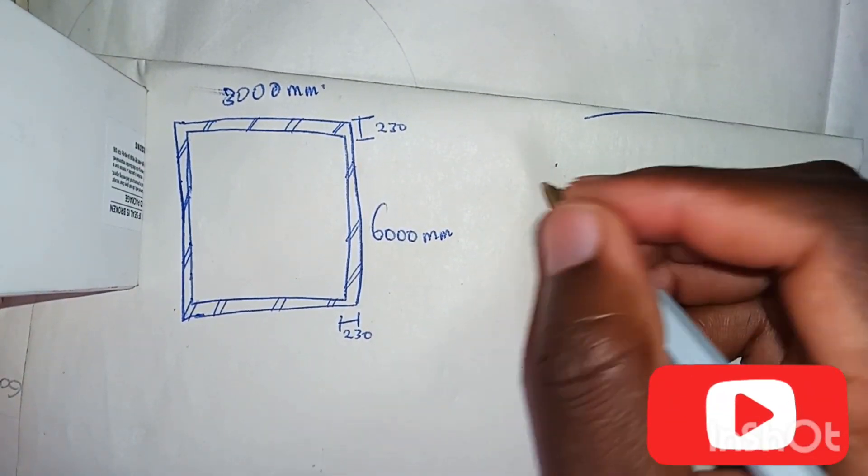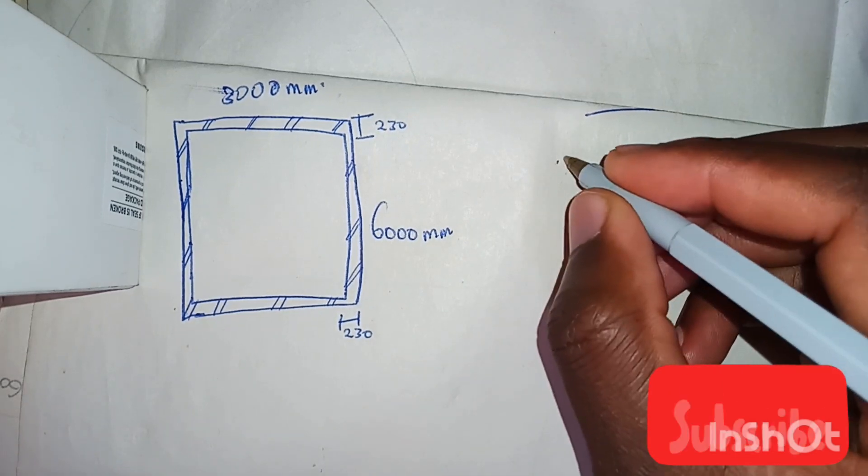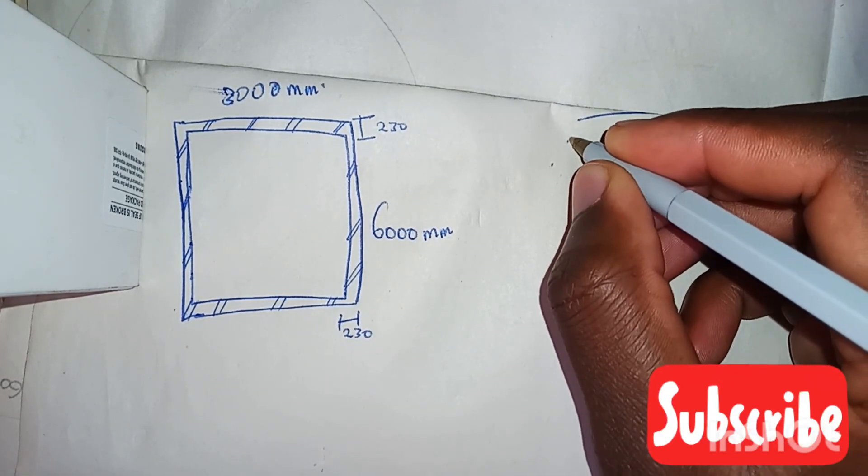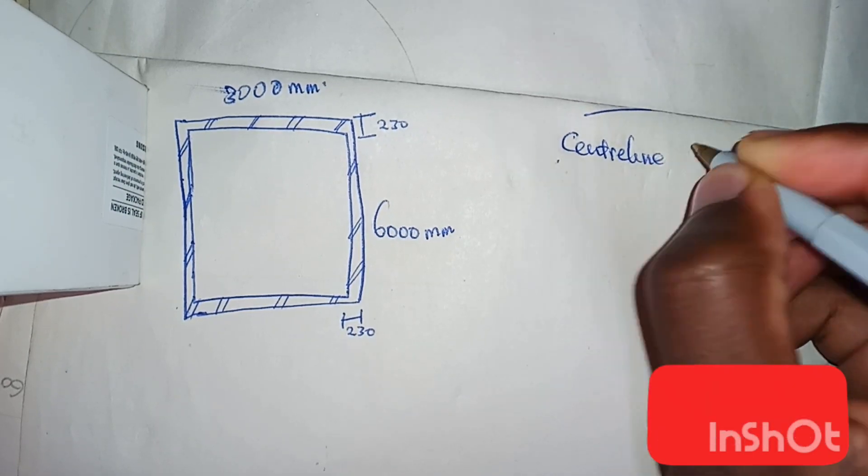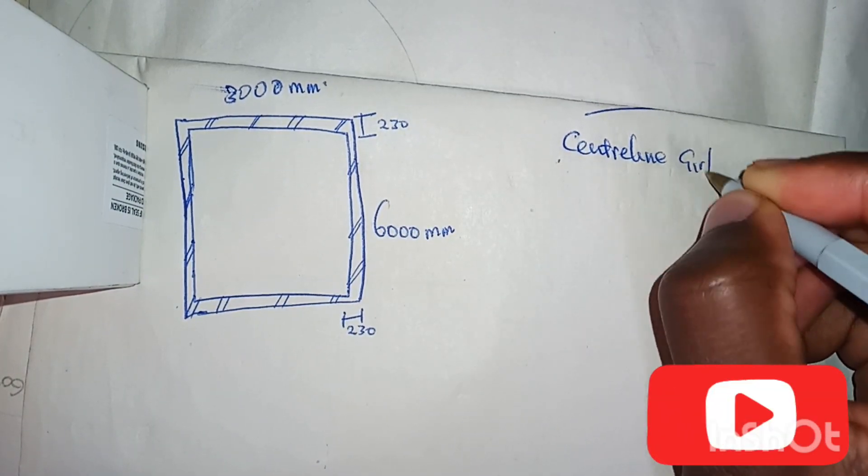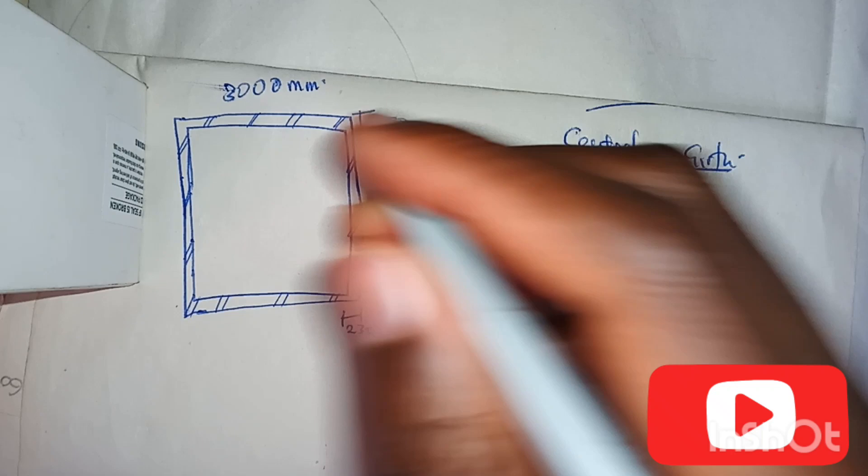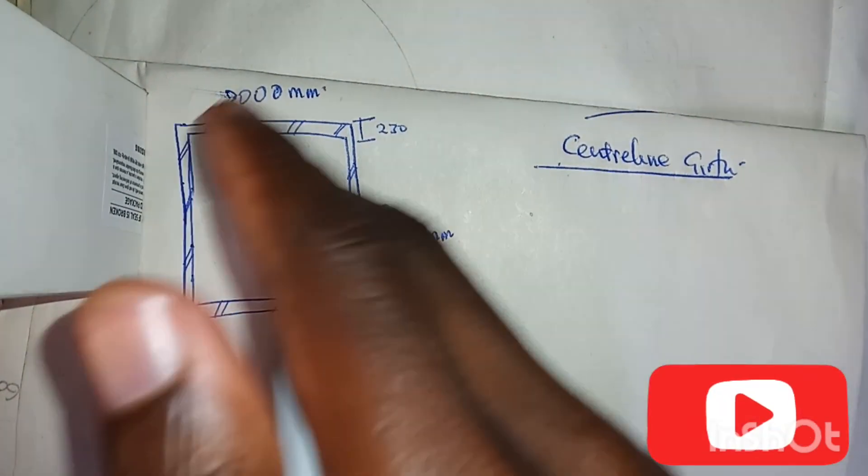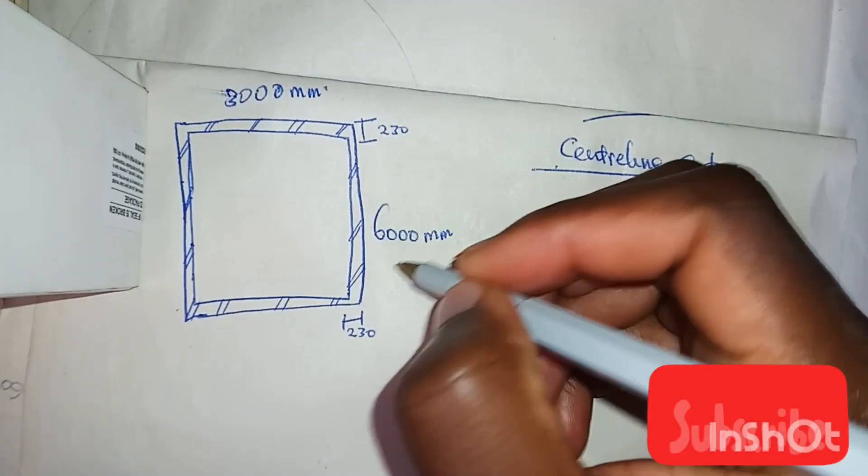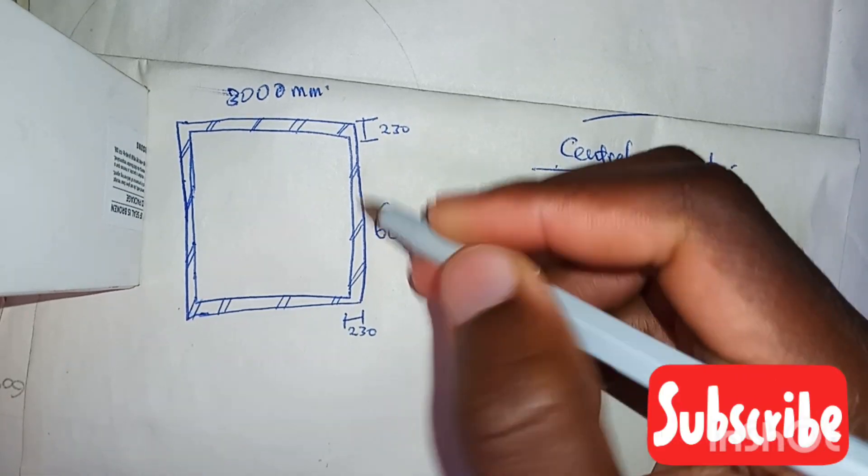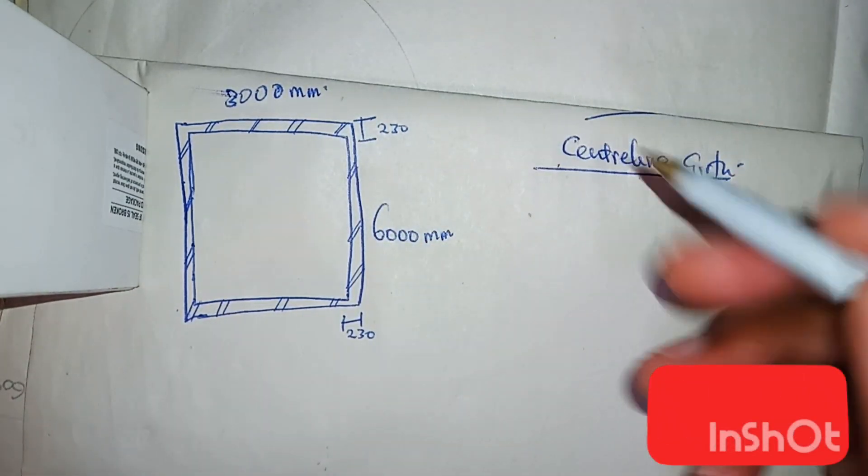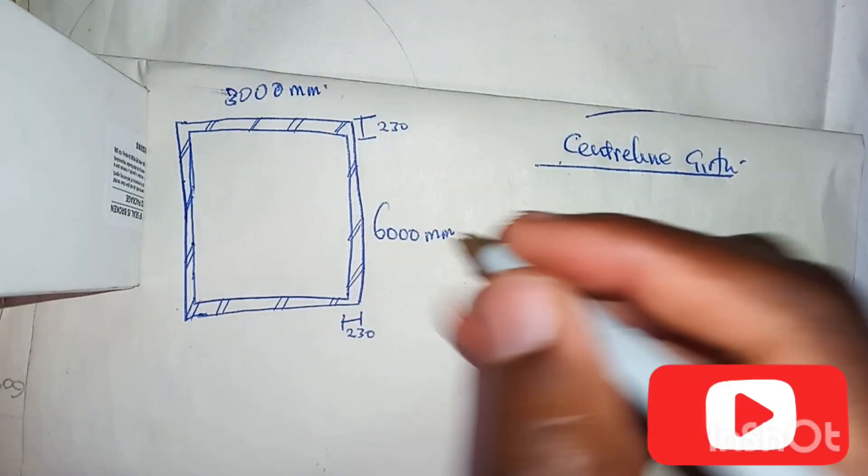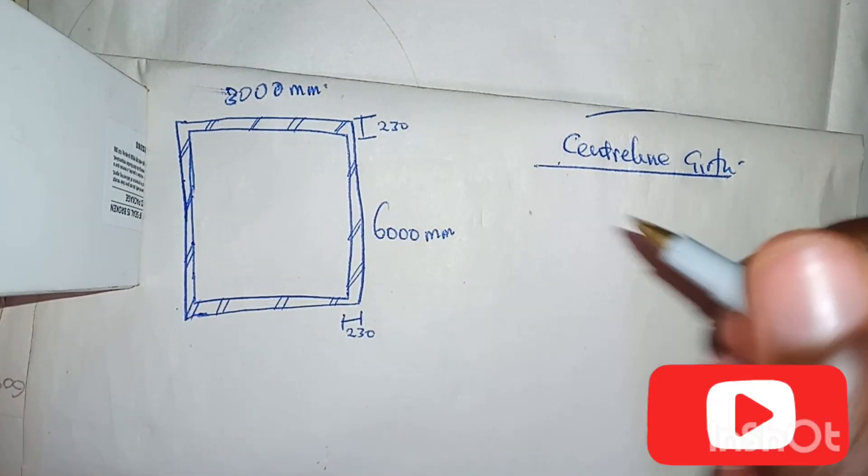How do we calculate center line girth? So we add length by width. We have our length is 6,000 millimeters and our width is 3,000 millimeters. So what we do is we take 6,000 millimeters plus 3,000 millimeters.